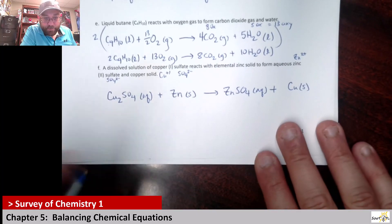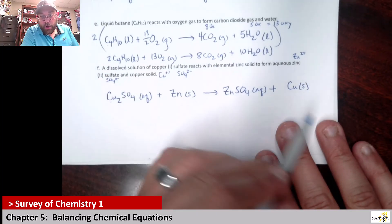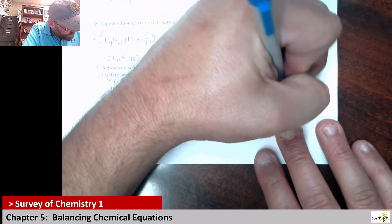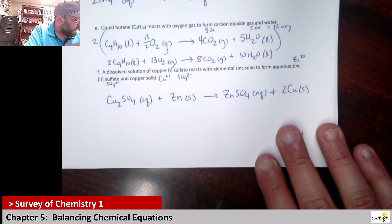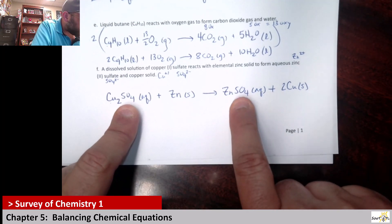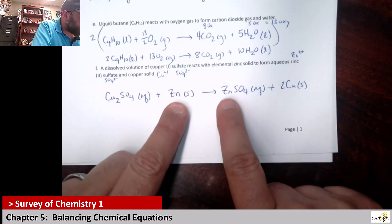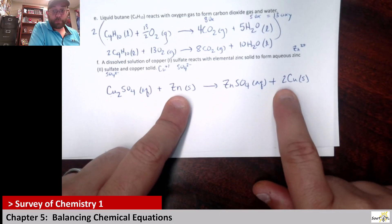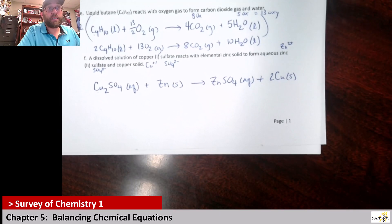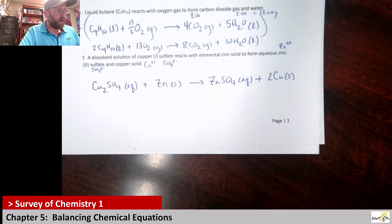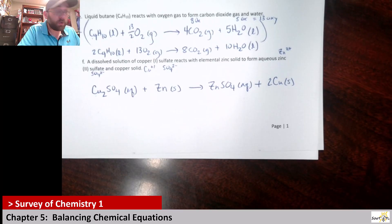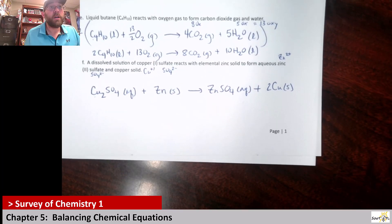Checking balance: 2 coppers on the left, 1 on the right, so put a 2 in front of Cu solid. Sulfate: 1 to 1 — balanced. Zinc: 1 to 1 — balanced. That's the only change needed. Hopefully this helped with balancing and gave some extra practice with naming. Until next time — stay weird, adios!